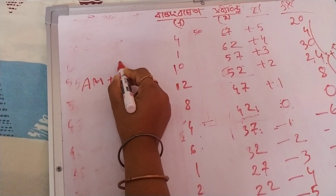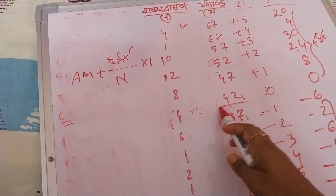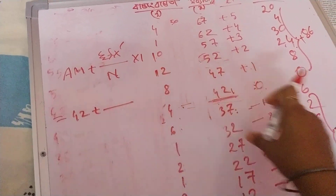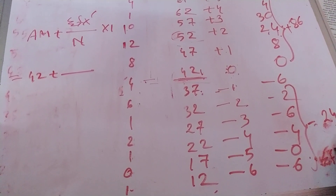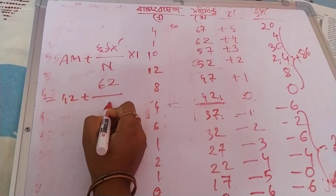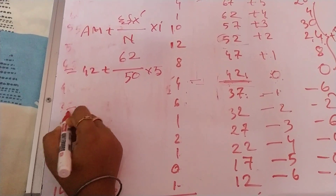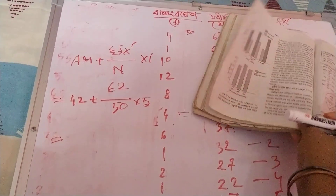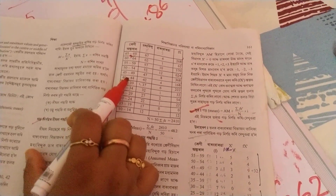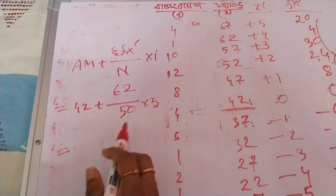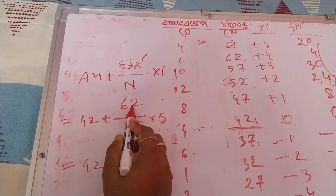Am plus summation fx by n into i, how much am? I am 12. 42. I am 42. Summation fx by n, am plus summation fx by n, which means 62. And am 50, I am 5. The dollar is 5. Now we're going to add 5 to the 4. This is the 5 to the 4. Now we're going to add 5 to the 4. 25N.